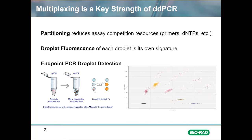Partitioning of the sample creates a unique situation where assays do not have to compete for PCR resources like bulk solution multiplexing does. The more partitions, the more assays that can be multiplexed. Each droplet partition will have its own fluorescence, allowing for many more possible positive clusters to be identified clearly.